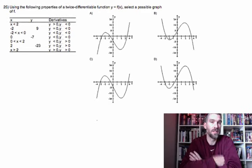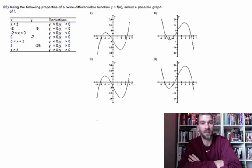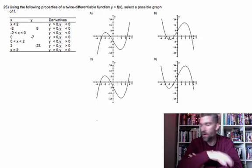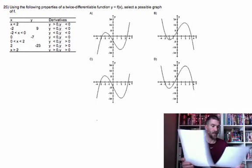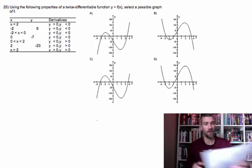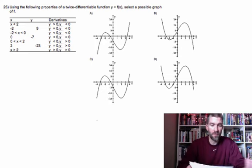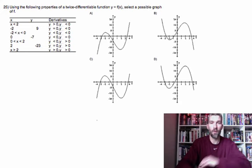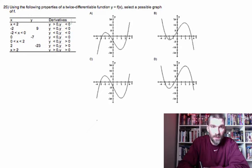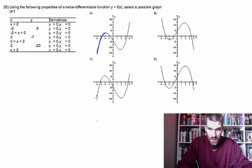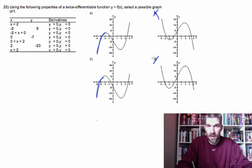The last question: use a table of properties of a twice-differentiable function to select a possible graph of f. For x-values less than 2, the first derivative is greater than 0 and the second derivative is less than 0 — so the function is concave down and increasing. That eliminates B and D, which are decreasing and concave up. We're looking at A and C.